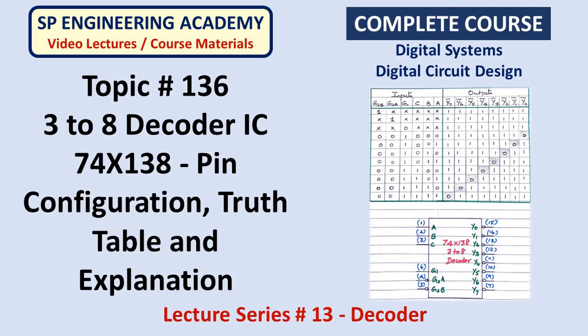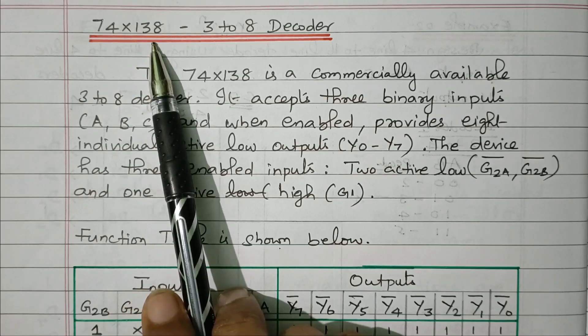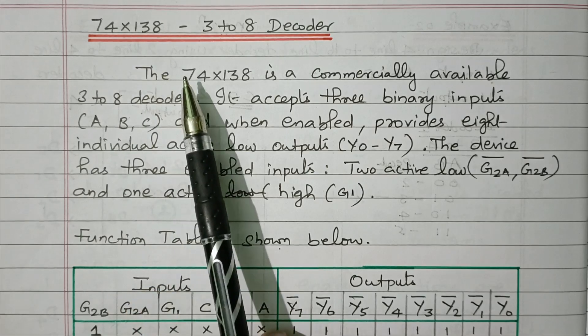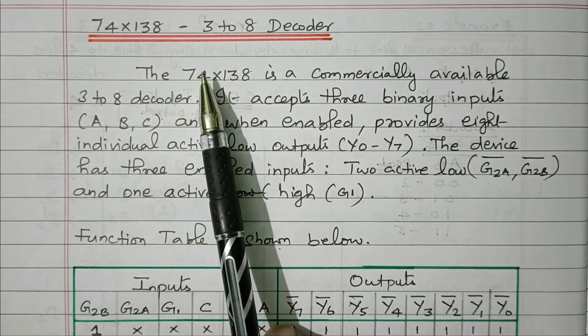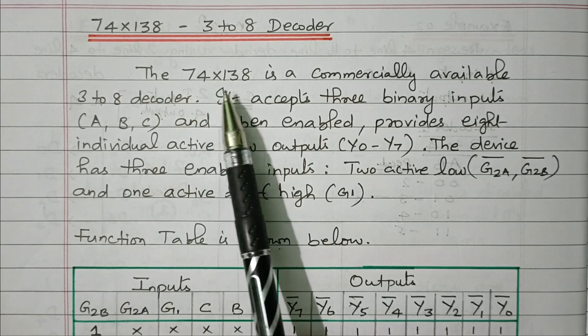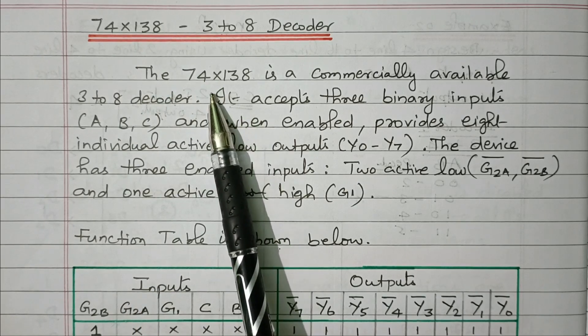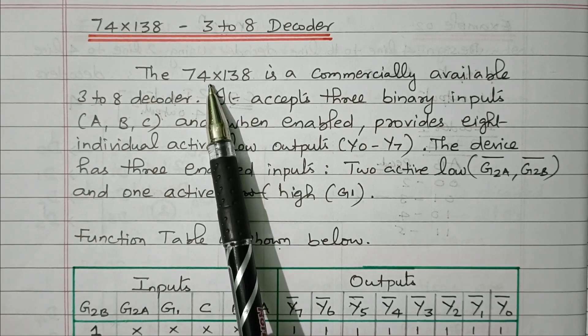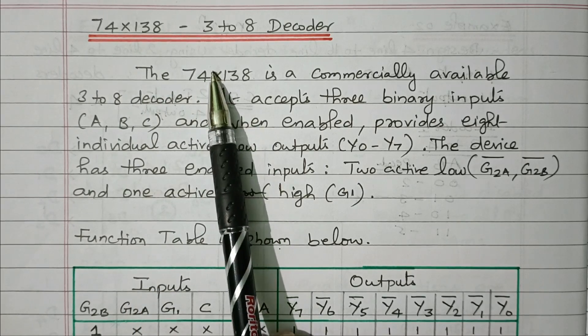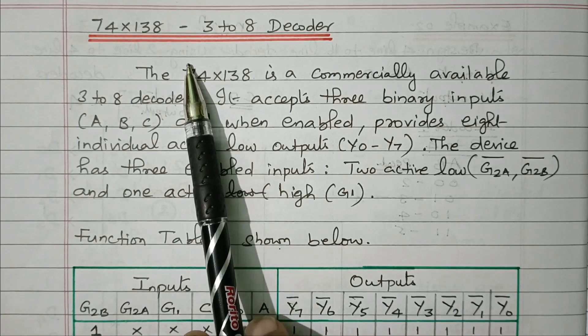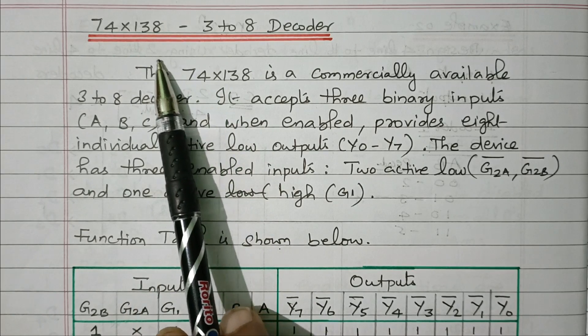Welcome viewers. In this video we will see the 3-to-8 decoder IC, the IC number 74X138. Subscribe to the channel for more videos and notifications. Soft copy of this material is available in the drive; the link is given in the description box.